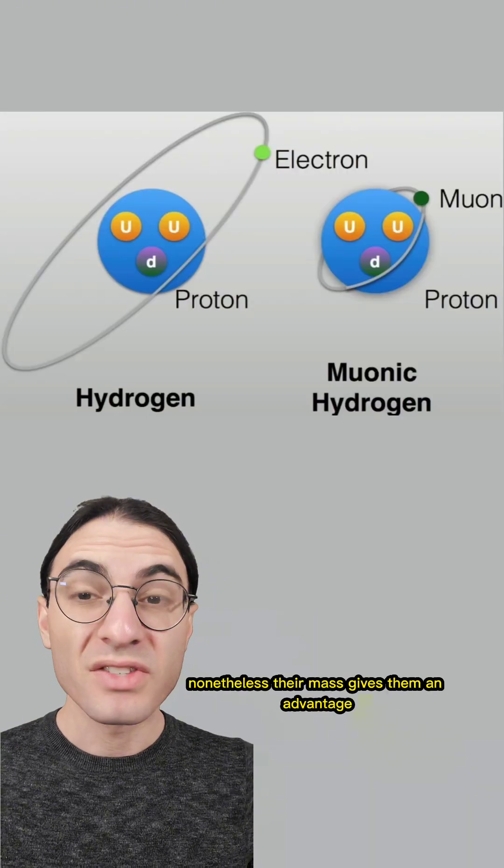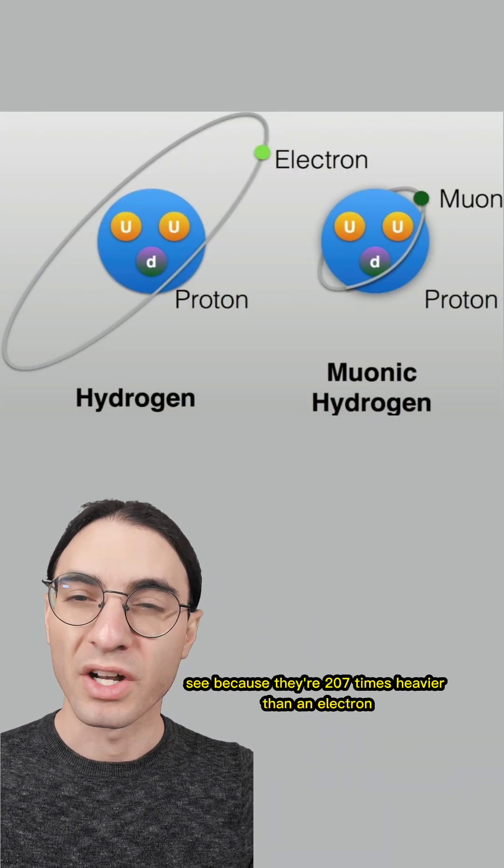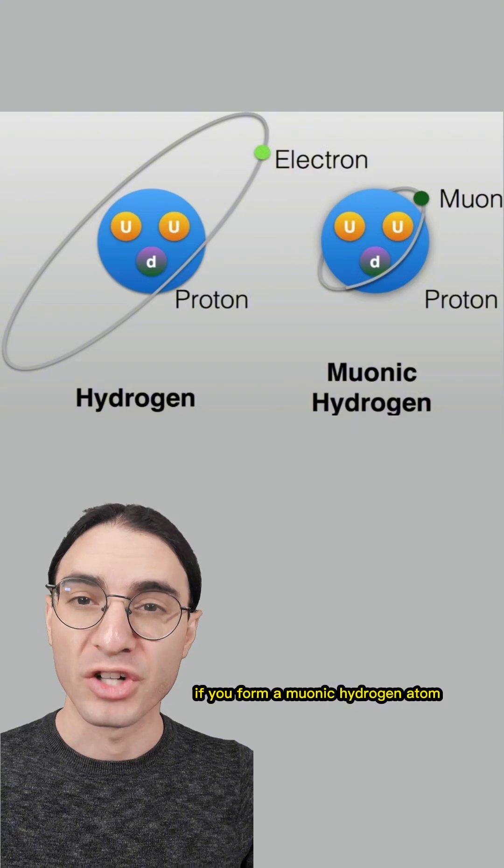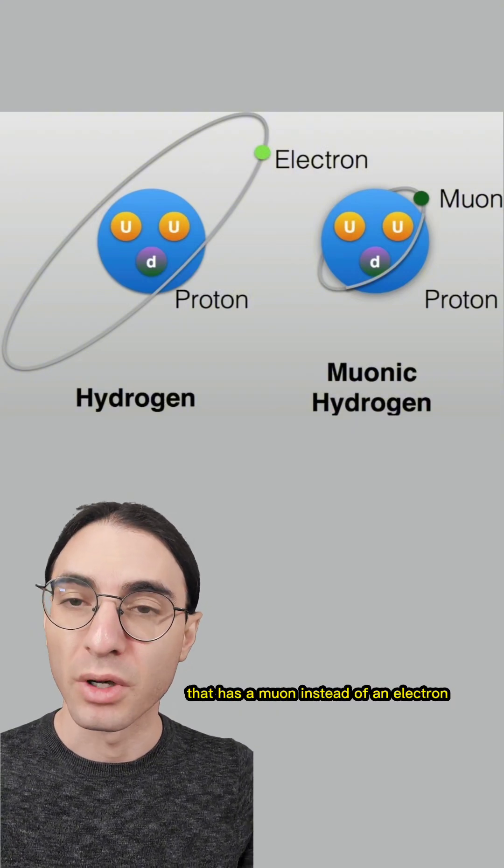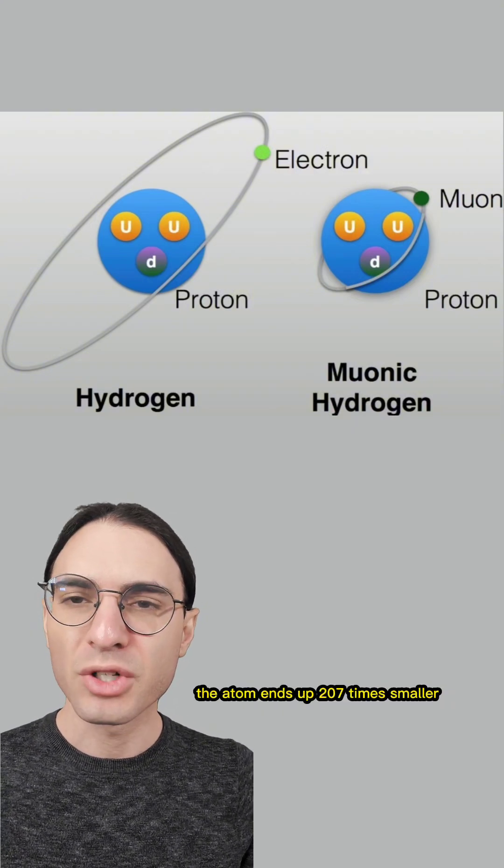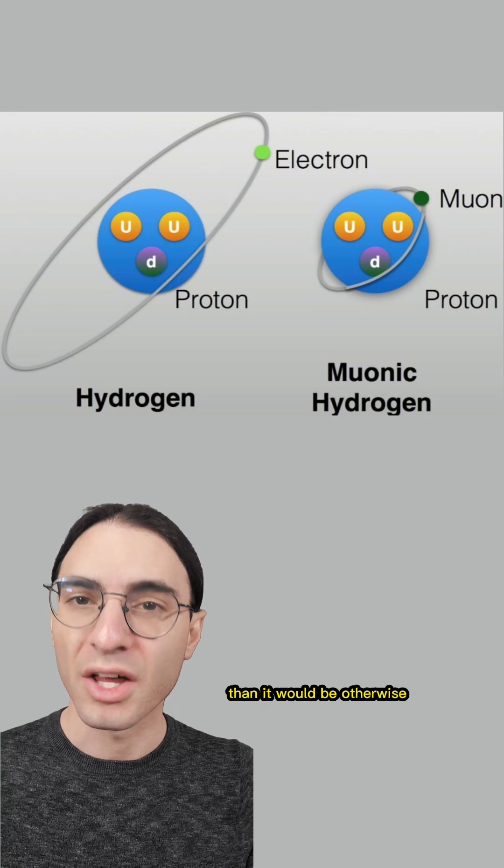Nonetheless, their mass gives them an advantage. Because they're 207 times heavier than an electron, if you form a muonic hydrogen atom, which is a hydrogen atom that has a muon instead of an electron, the atom ends up 207 times smaller than it would be otherwise.